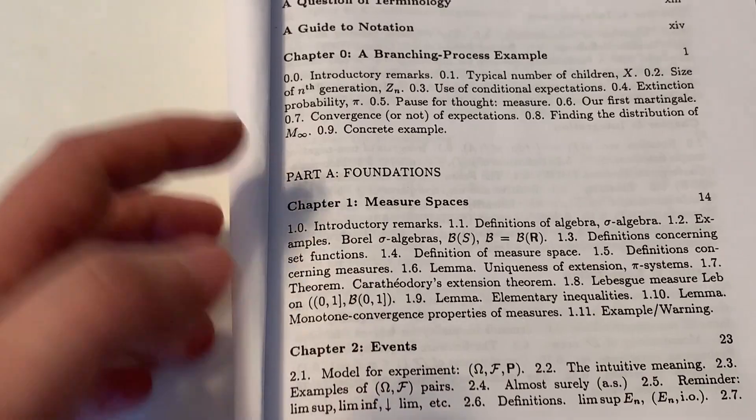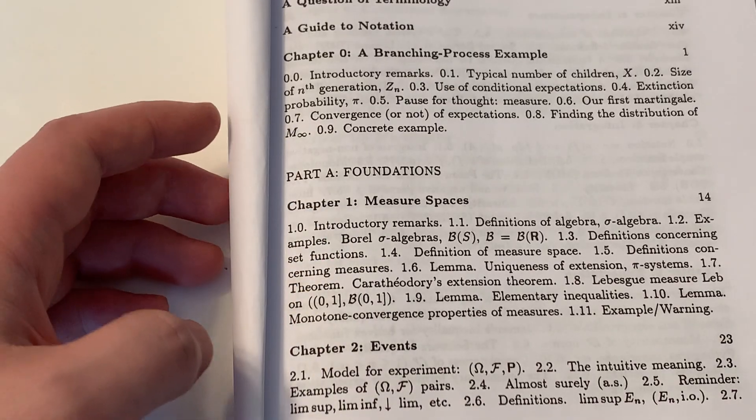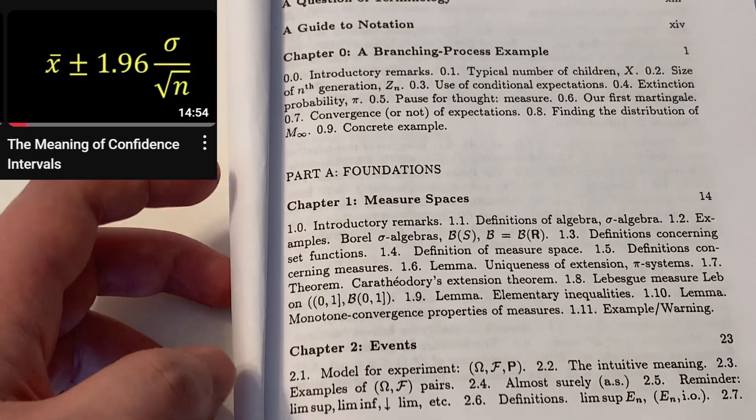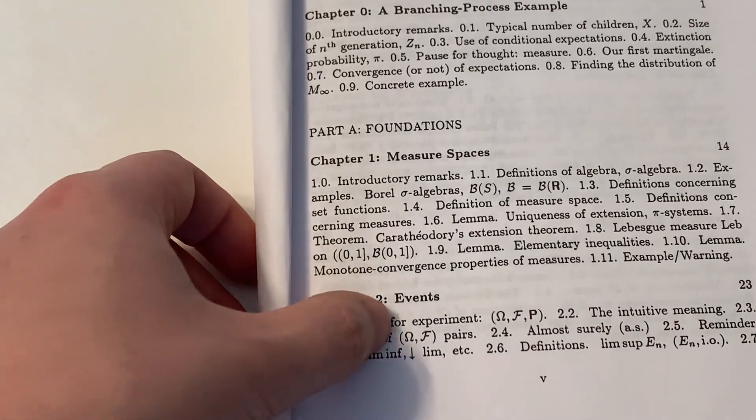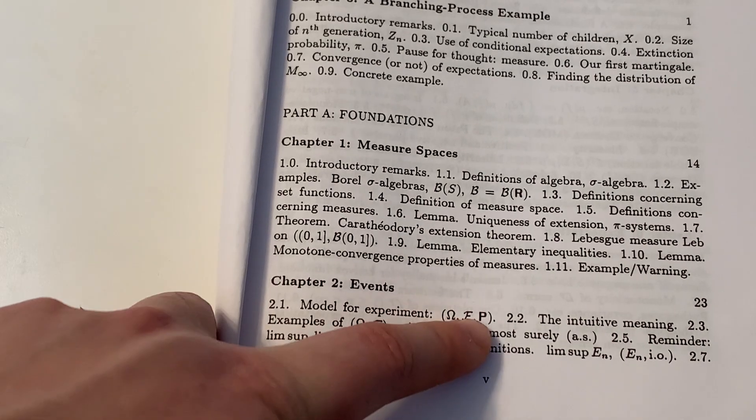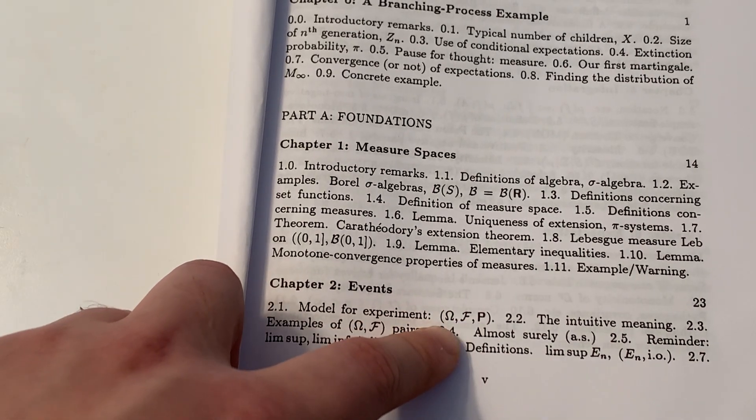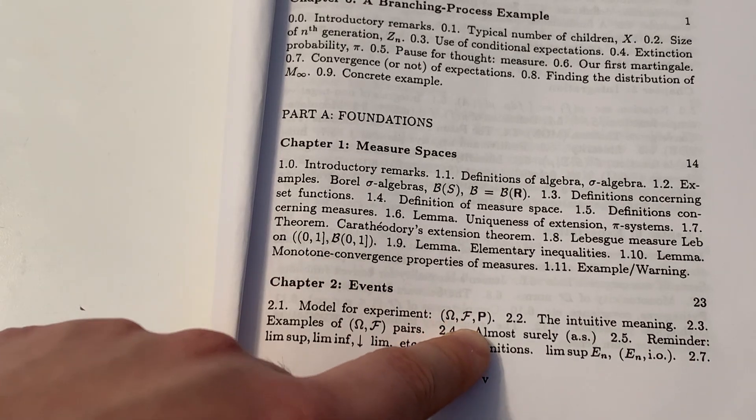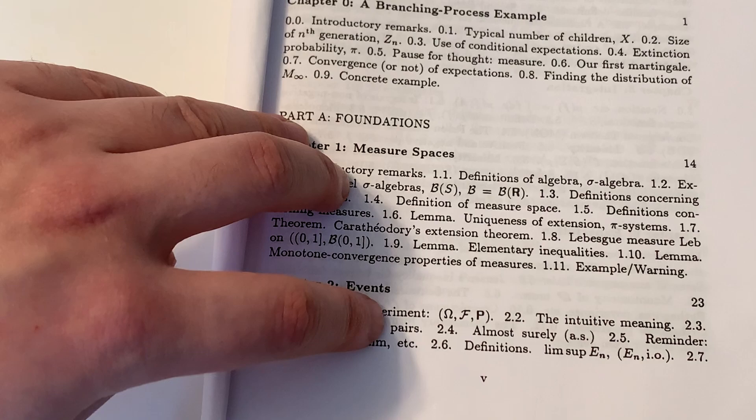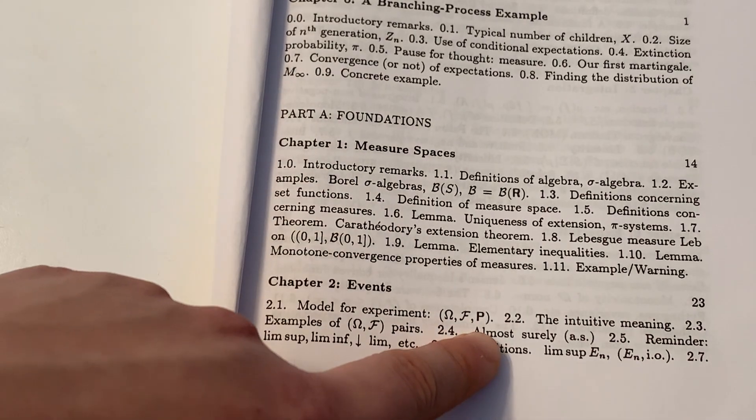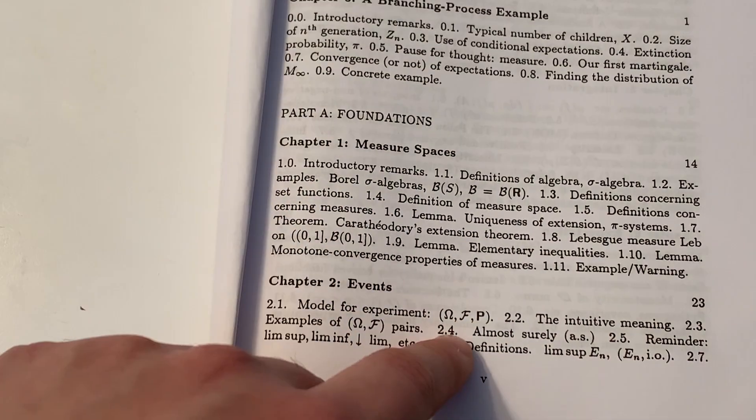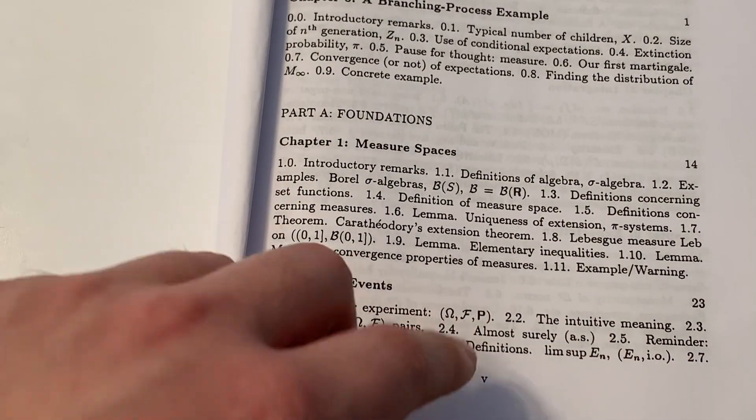Chapter 1, measure spaces. It introduces the terminologies of measure theory. In my video on the meaning of confidence intervals, I use some of its language. Chapter 2 is events. Here we have this famous triple, (Ω, F, P). Omega is an arbitrary set called the sample space. And the scripted F is a sigma algebra. That is the collection of events we're considering. And P is a probability measure that assigns each event a probability. This is a setup by Kolmogorov, pretty much taken verbatim.